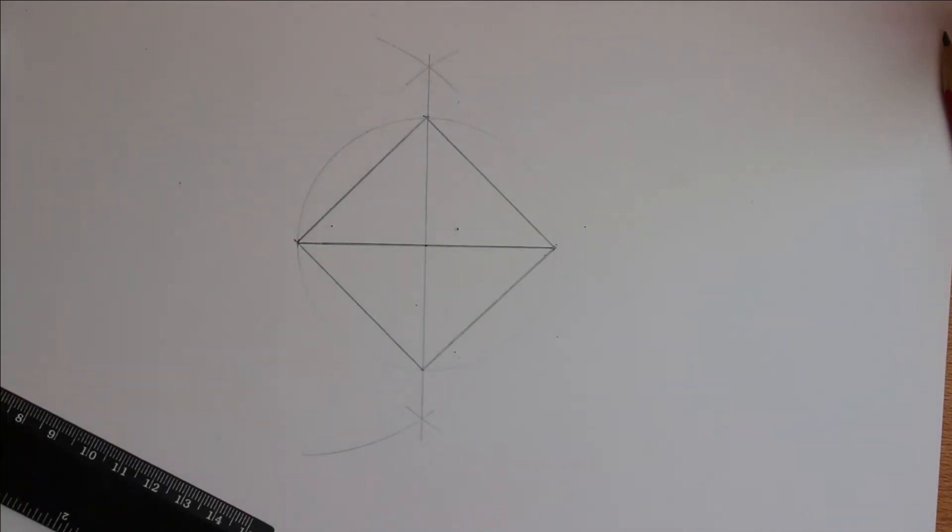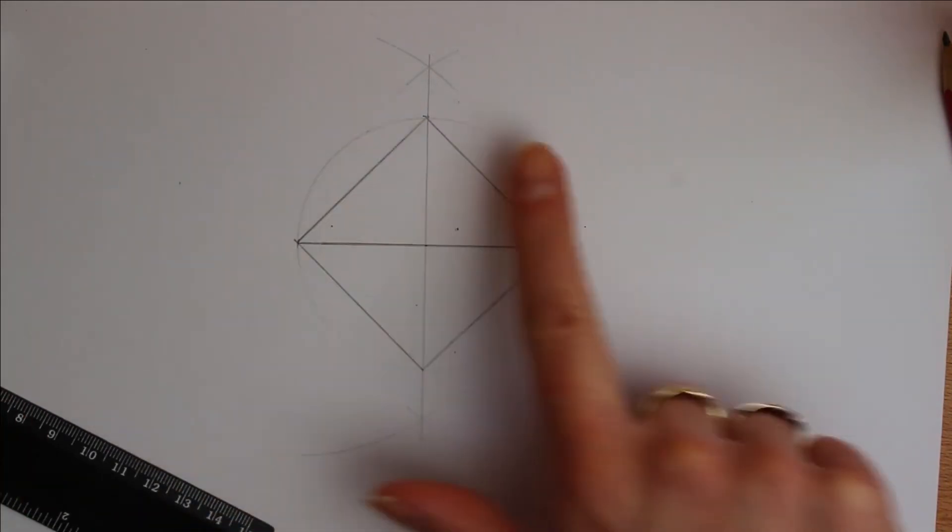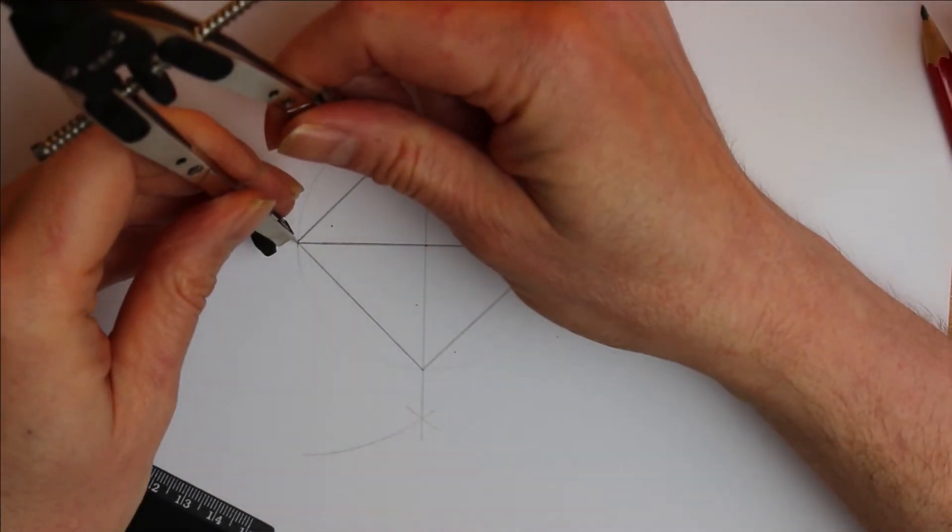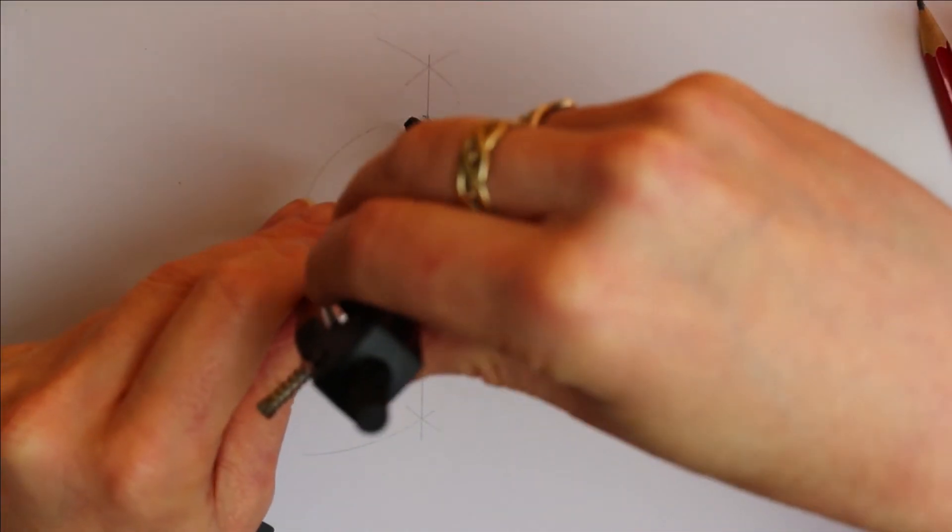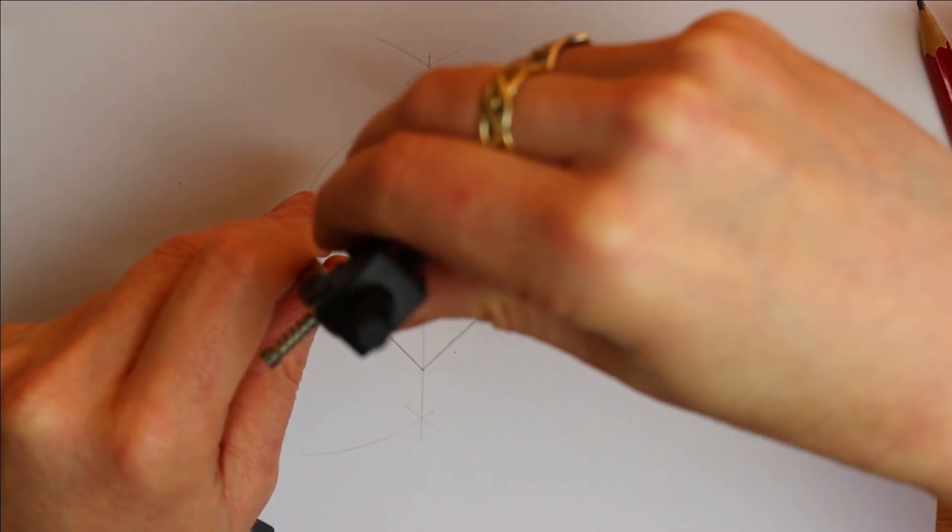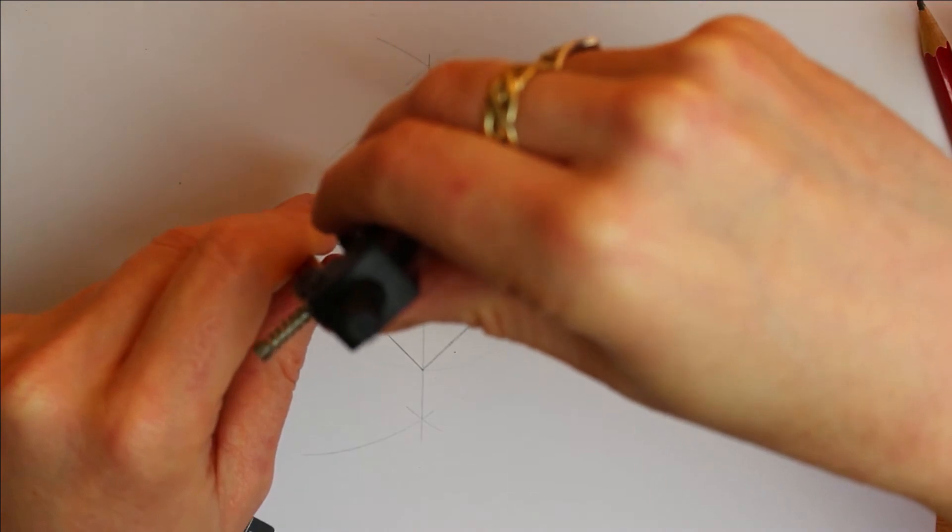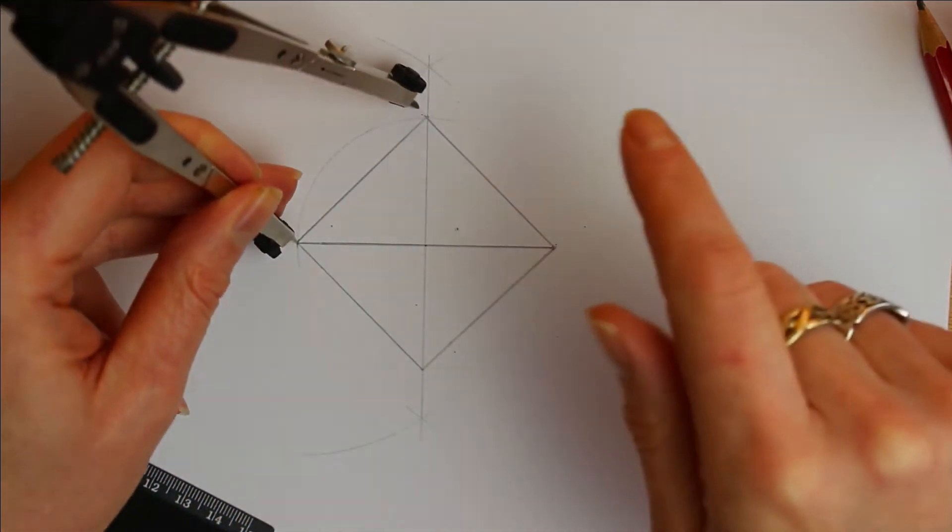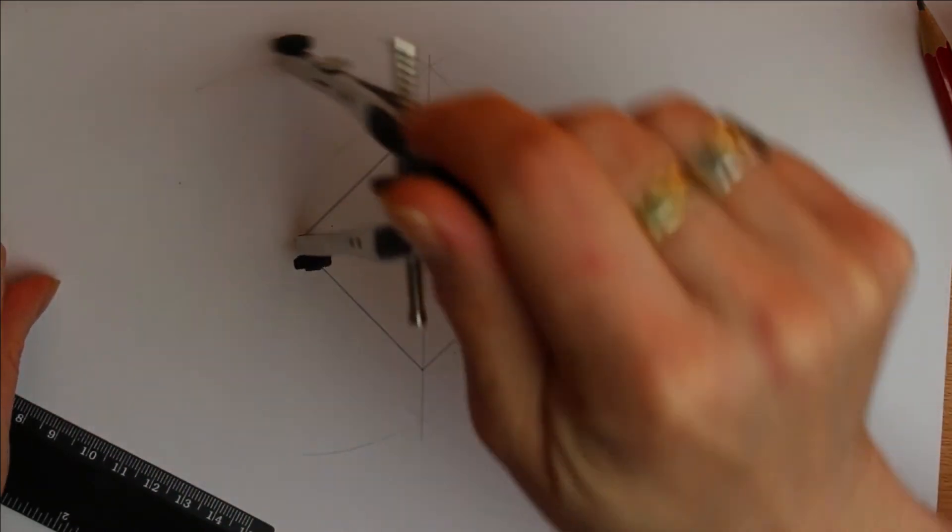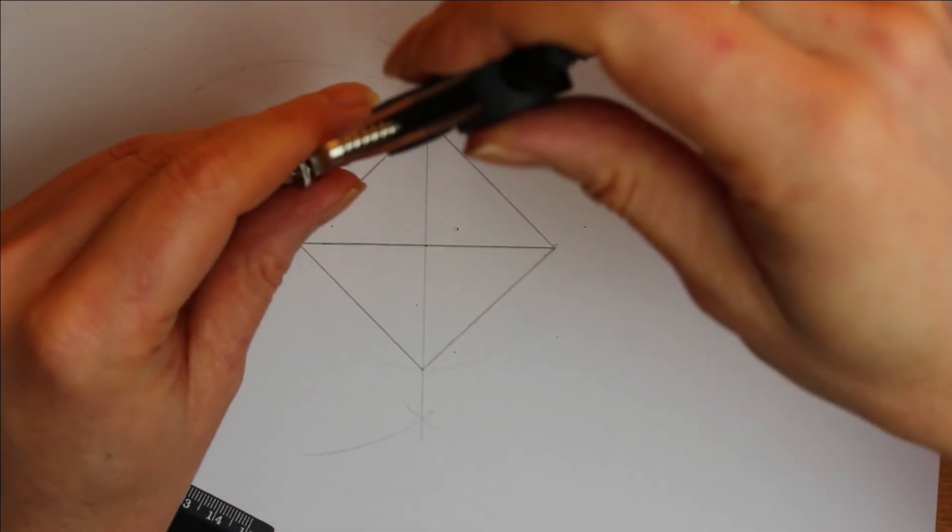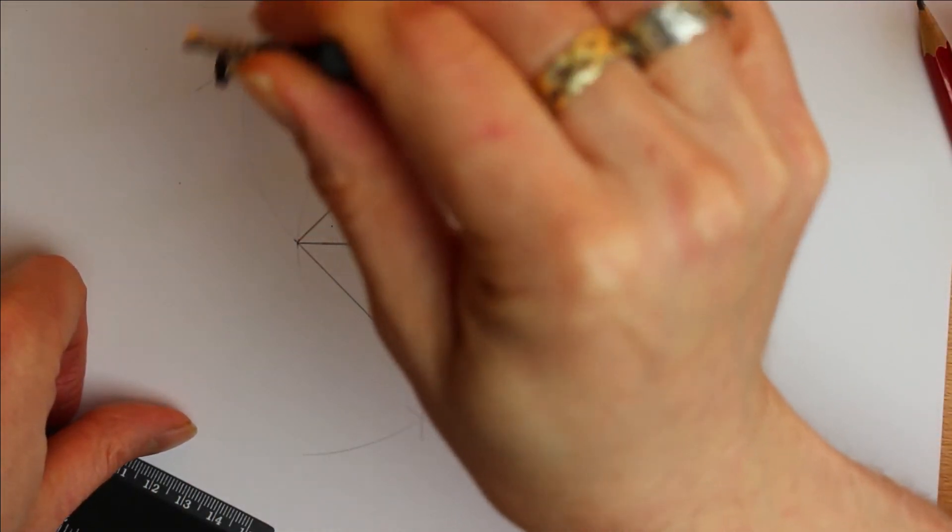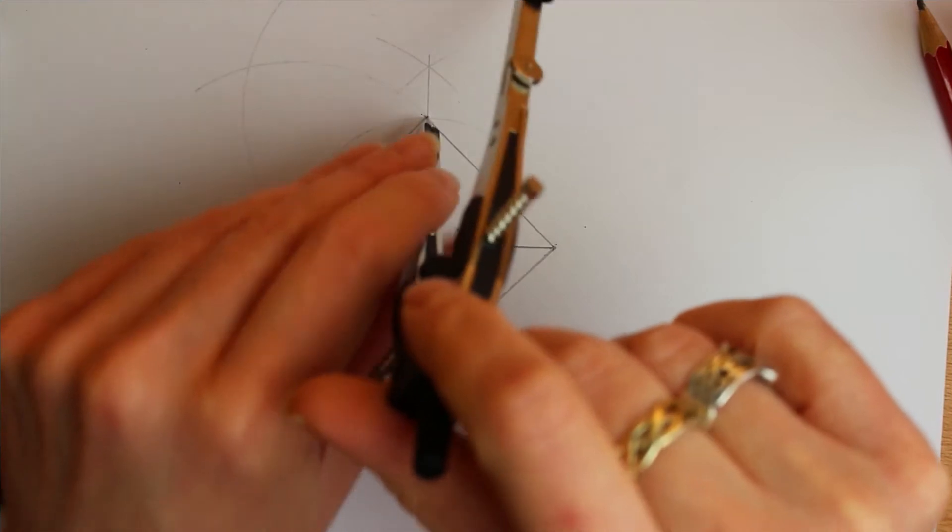Step four, we want to be making four equilateral triangles. So now just put the compass on each corner. Let's just adjust this so it's exactly the length. Now what we want to do, we want to swing an arc here. Put the point on the compass on the other corner and swing up to create another arc.